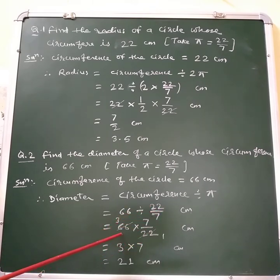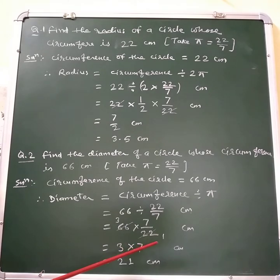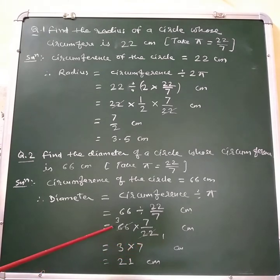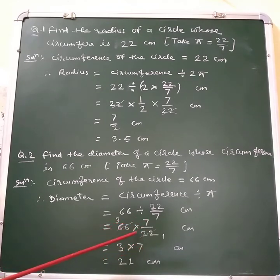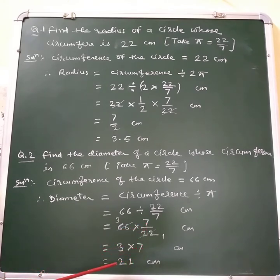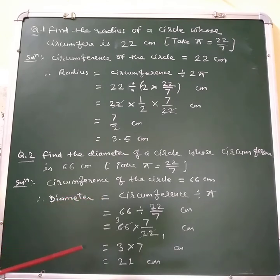Here 66 is divisible by 22, giving 3. So it remains 3 multiplied by 7, which equals 21 centimeters. Hence the diameter of the circle is equal to 21 centimeters.